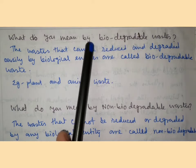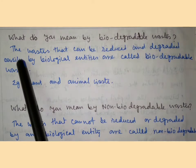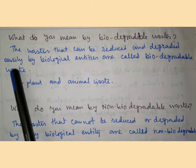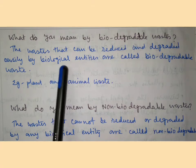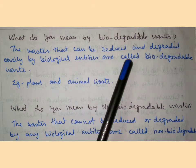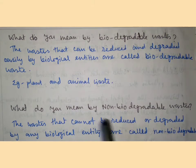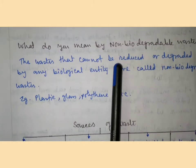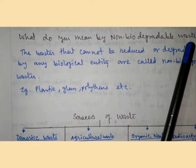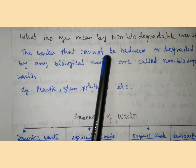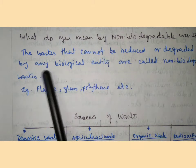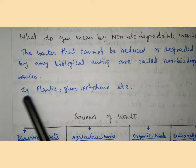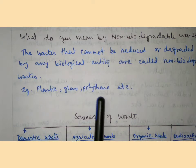Biodegradable waste: waste that can be broken down and degraded easily by biological entities is called biodegradable waste — for example, plant and animal waste. Non-biodegradable waste: waste that cannot be broken down or degraded easily by any biological entity is called non-biodegradable waste — for example, plastic, glass, and polythene.